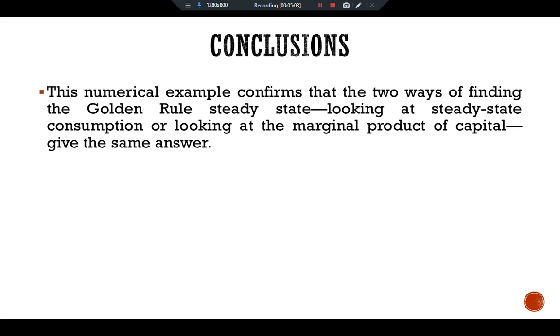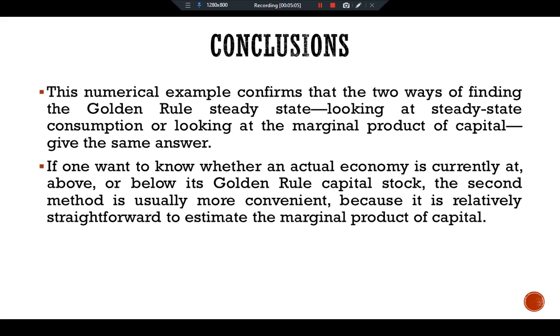If one wants to know whether an actual economy is currently at, above, or below its golden rule capital stock, the second method is usually more convenient because it is relatively straightforward to estimate the marginal product of capital.